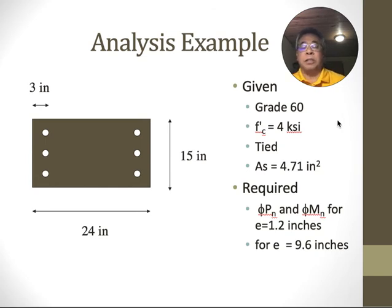We have a 15 by 24 column, three inches from the edge to the centroid of the steel. It has a total of 4.71 square inches, and e is 1.2 inches and 9.6 inches. For those two cases, I want to know the axial load capacity, and M will just be e times P.